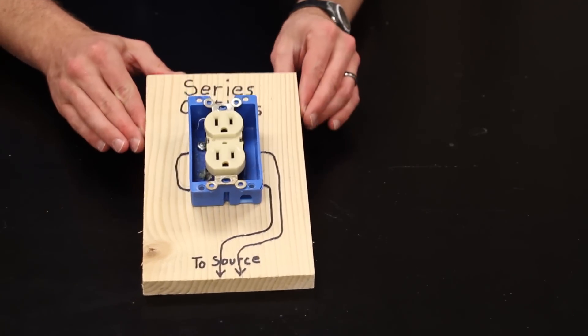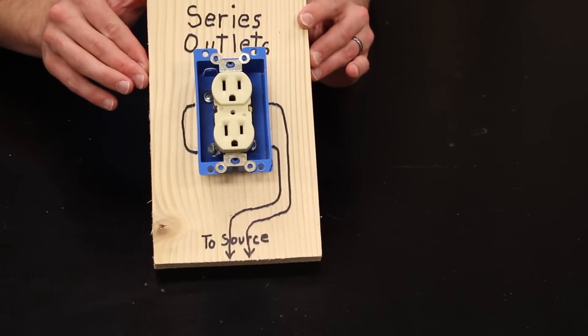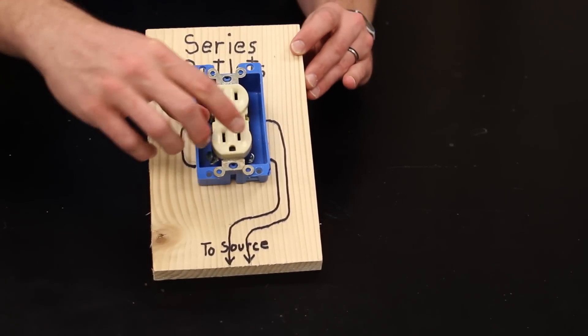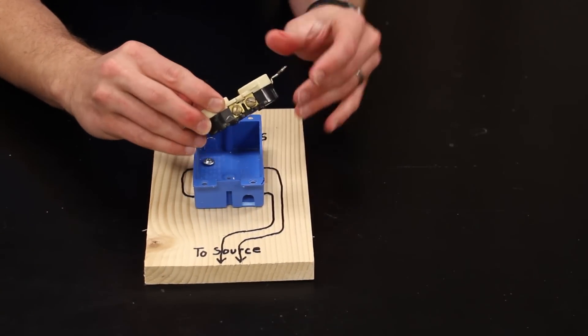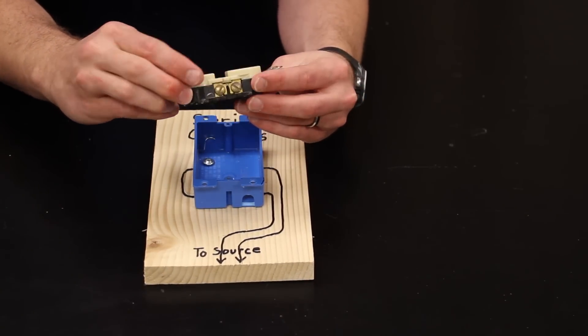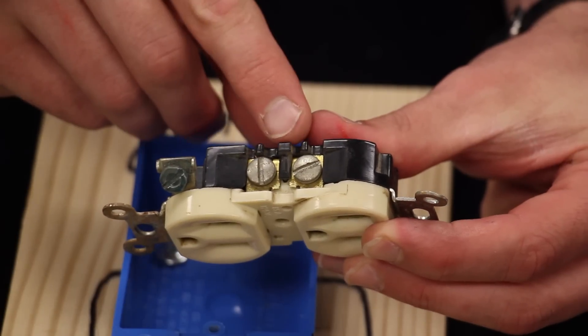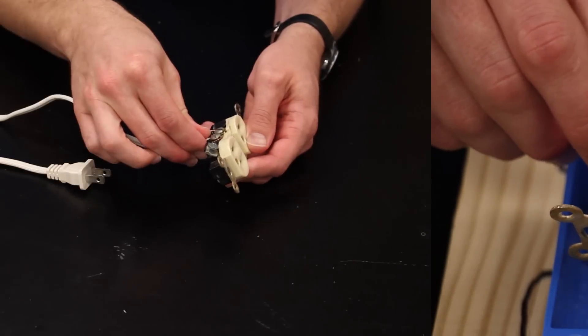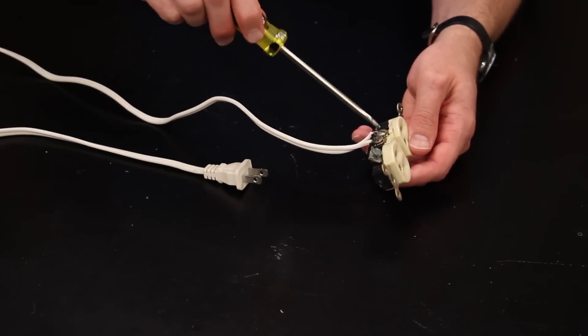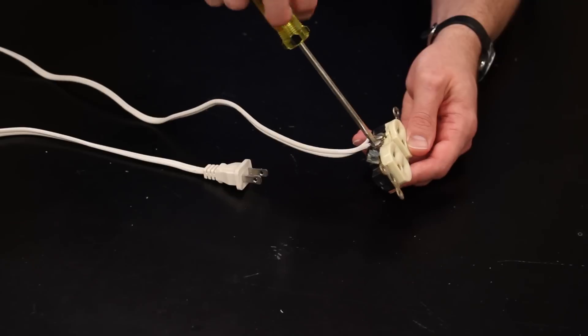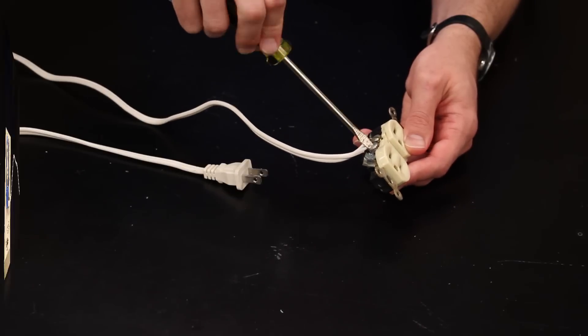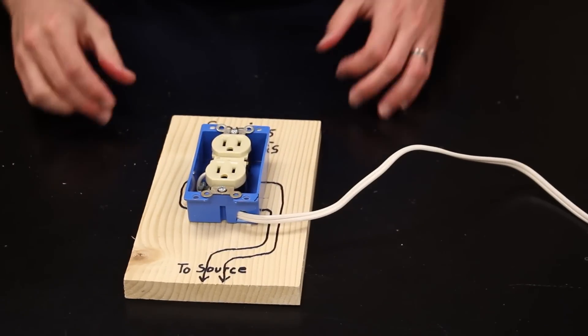It is convenient to alter a duplex outlet so that each outlet is in series with the other one. This can easily be done with an inexpensive duplex outlet that has had one of the copper connections between the two outlets cut. Using an extension cord with the insulation stripped away, connect to either screw of the cut side.